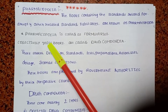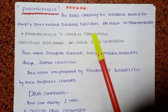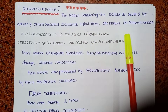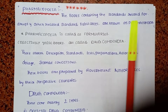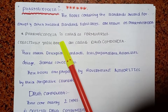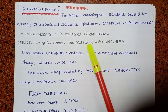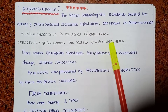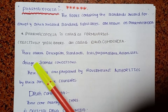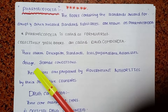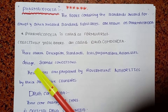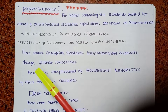Pharmacopoeia is also called formularies, and collectively these books are called complete pharmacopoeia books. They contain identification, complete details, standards, tests, and preparations.